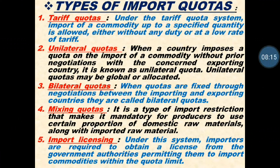This can create problems for the exporting country, because the exporting country's goods become more expensive and people will not purchase their commodity. So unilateral quota means the importer country, without informing or negotiating with the exporter country, imposes an import quota on their commodities. As a result, the exporter country's terms of trade become unfavorable — they may suffer losses.